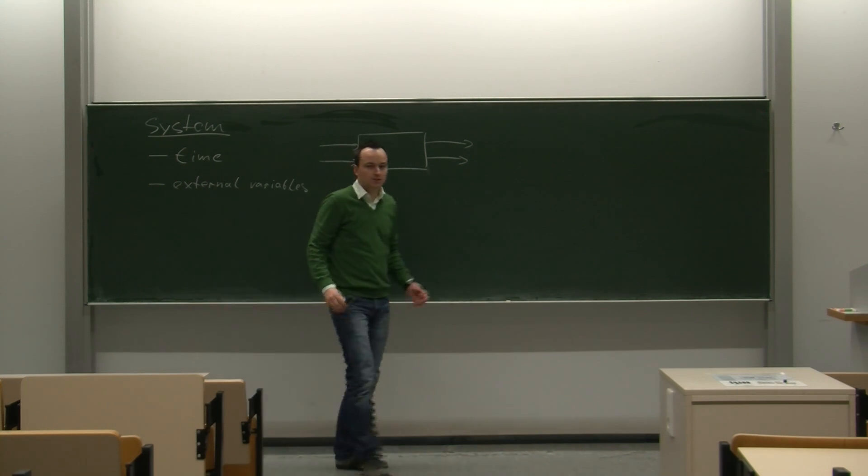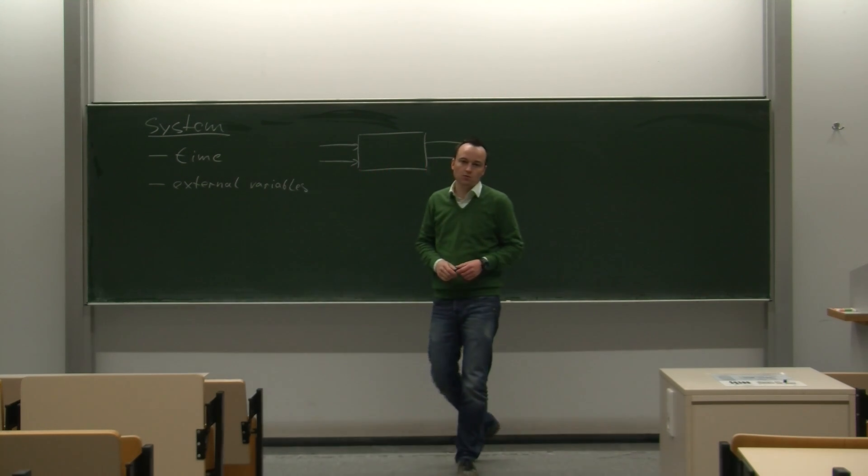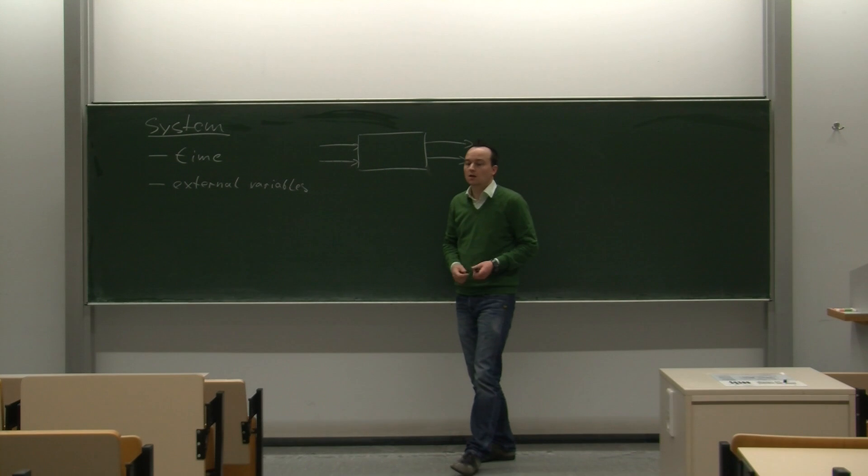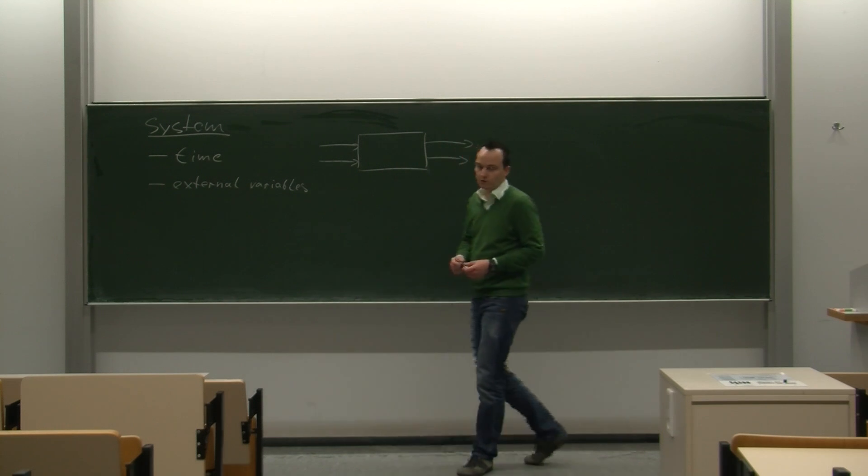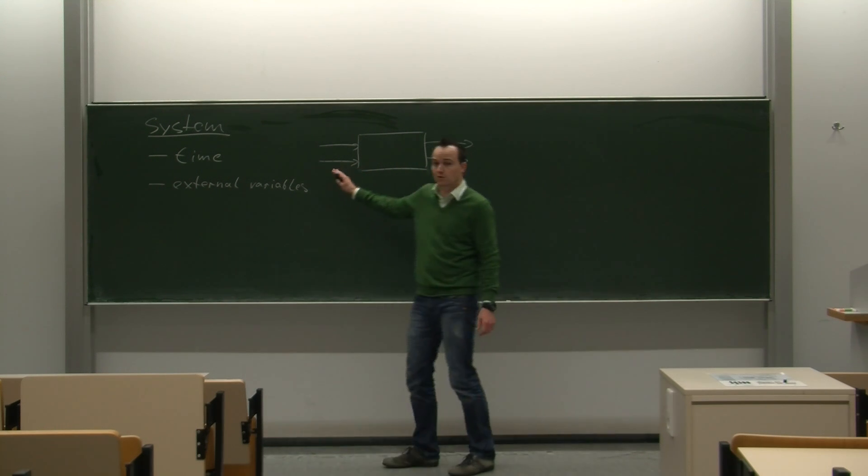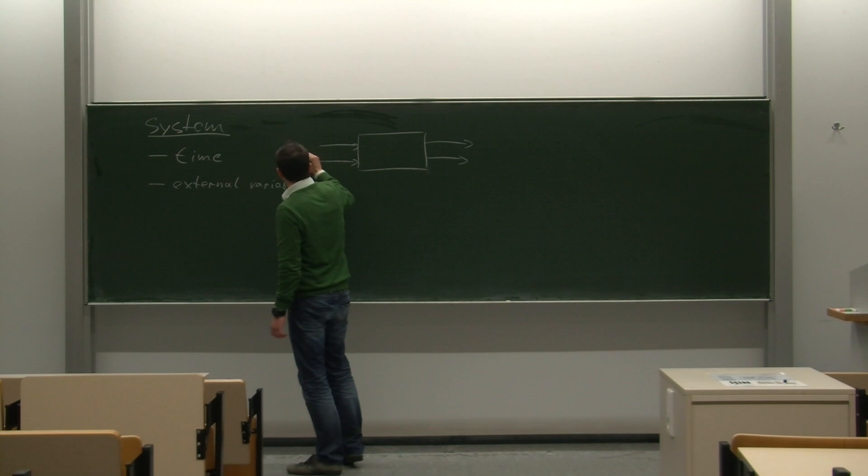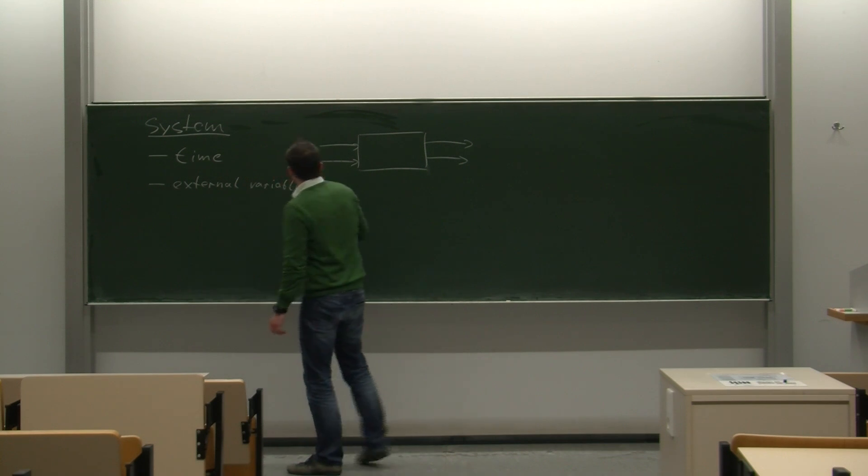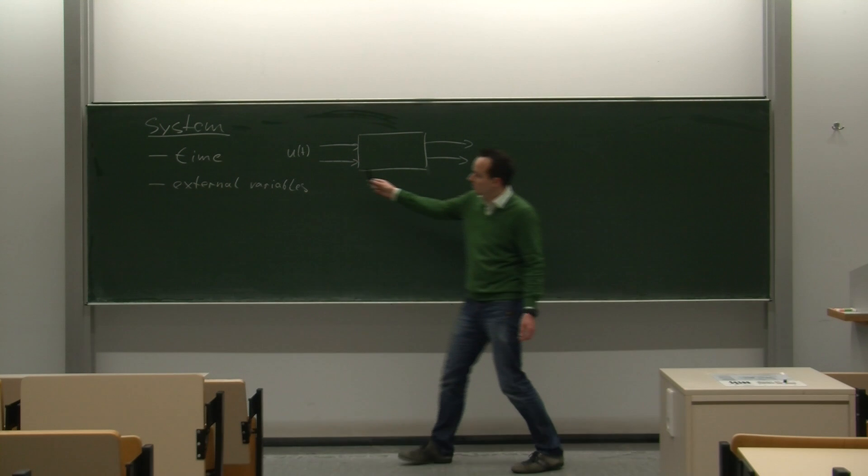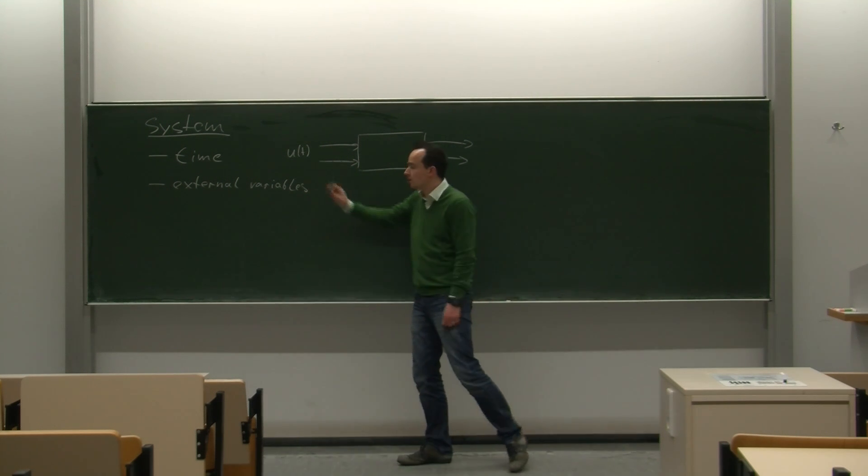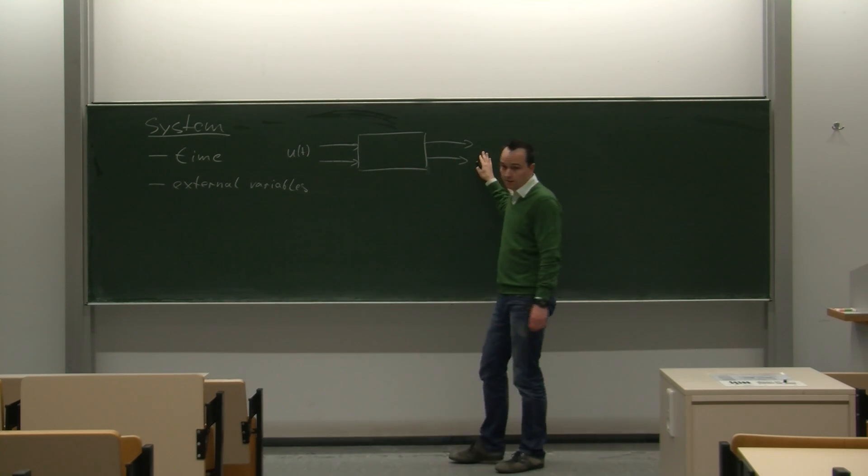And external variables can be distinguished into inputs and outputs. That distinction can be, in some cases, arbitrary, but very often it is done. So, here we have inputs, often called u(t). Here you already see the time dependence. Everything depends on time. And there are outputs.